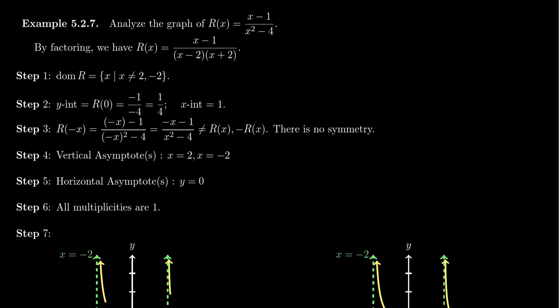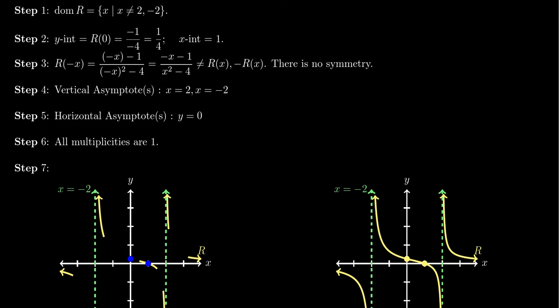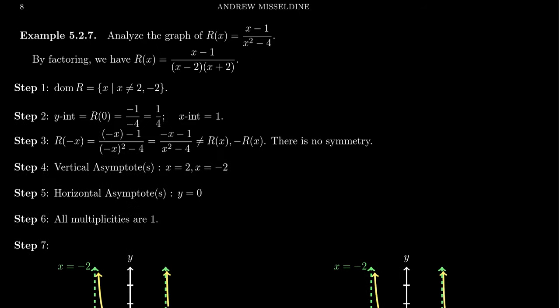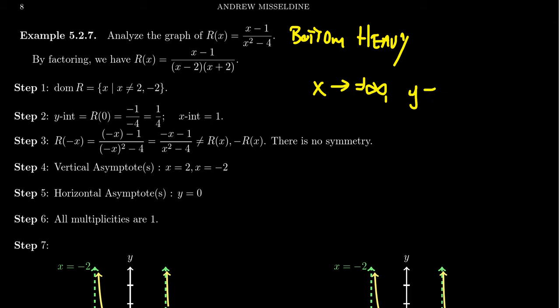Coming to the vertical asymptotes: this function is already in lowest terms — there are no common factors on top and bottom. So the things that make the denominator go to zero are 2 and negative 2, giving vertical asymptotes at x = 2 and x = −2. The x-intercept factor (x − 1) appeared once, so that's odd multiplicity. Each of the vertical asymptotes also has odd multiplicity. Everything in this function has a multiplicity of 1.